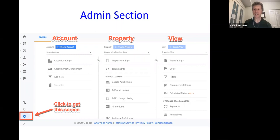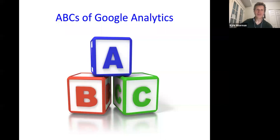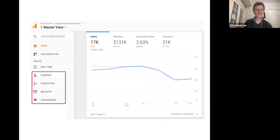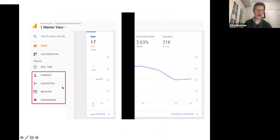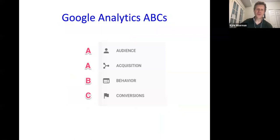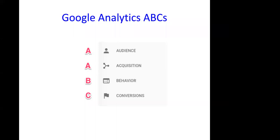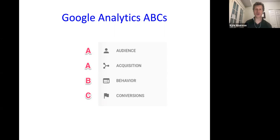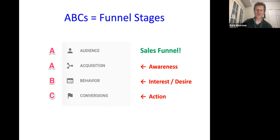One of the important things to stress today is the ABCs of Google Analytics — this is how they organize data into reports. When you open up any report, on the left you'll see the menu structure with four main sections: Audience, Acquisition, Behavior, and Conversions. These are the main categories of reports you'll get all your insights from, and what's really slick is they align with the sales funnel.